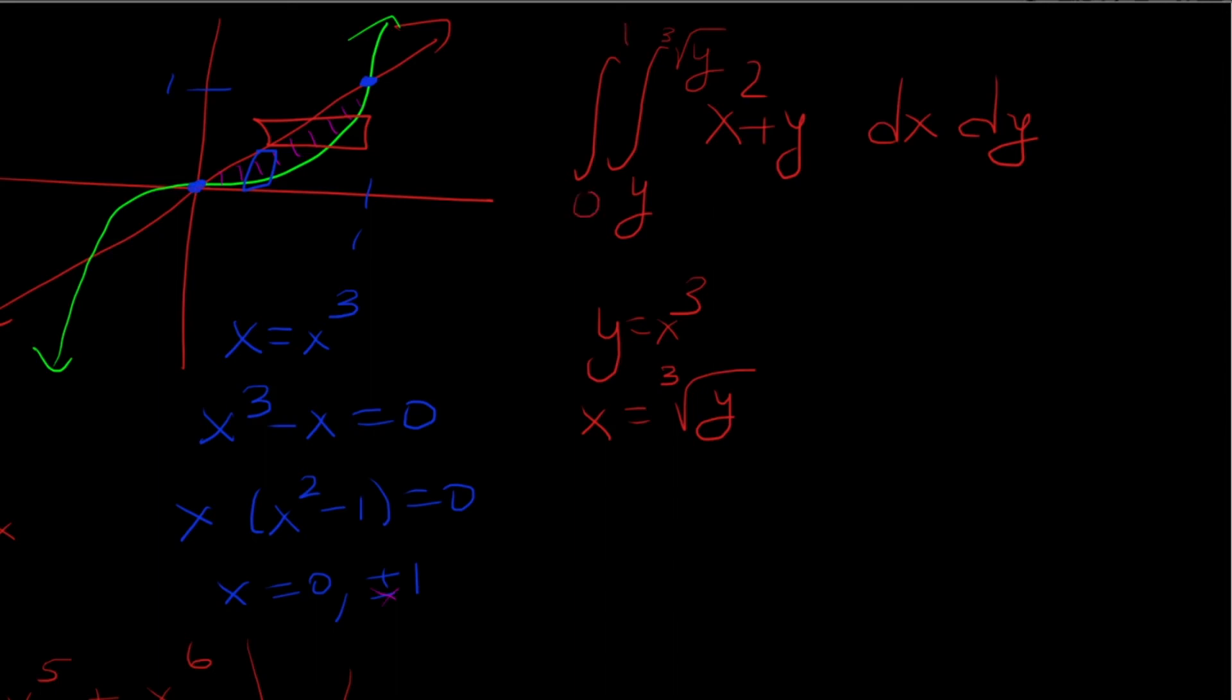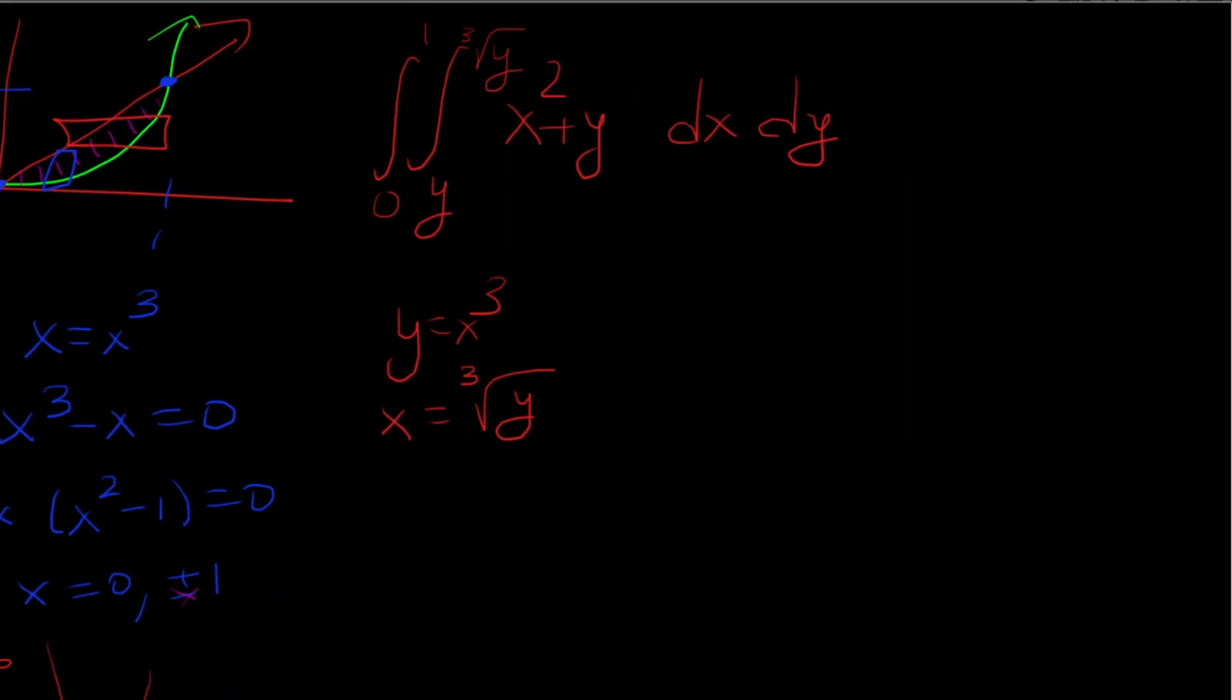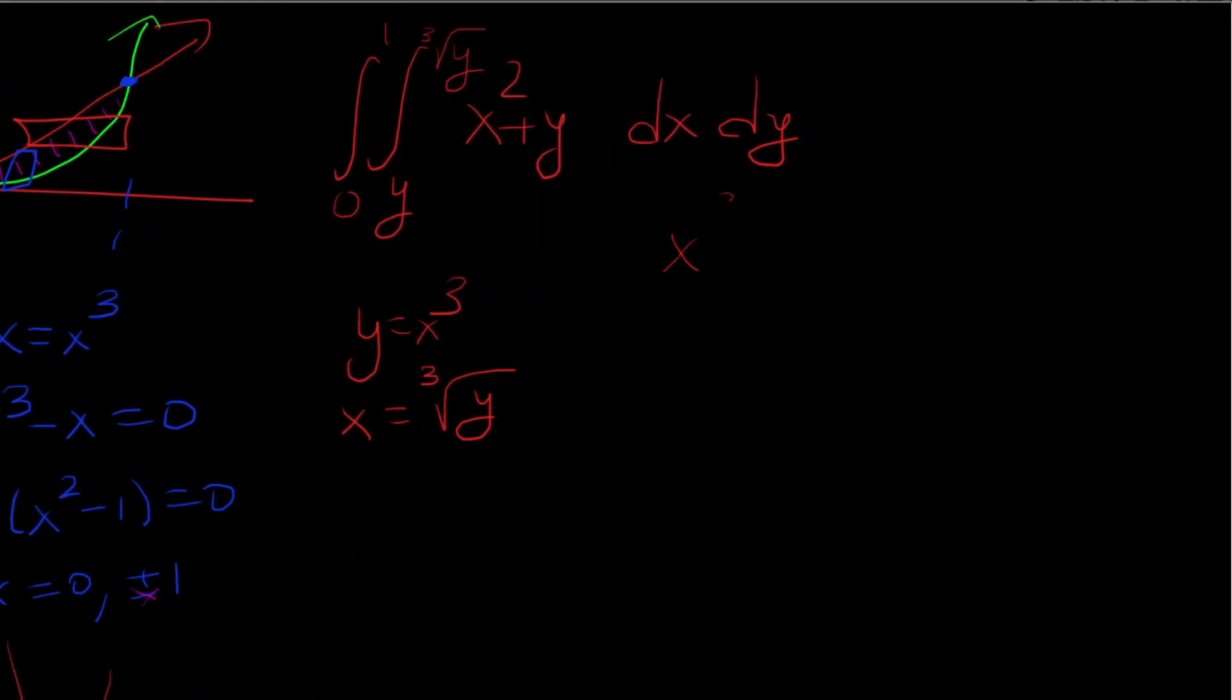So now I'm going to integrate this with respect to x first. So that's x cubed over 3 plus x y from y to cube root of y, and then we're going to take that result integrated from 0 to 1 with respect to y.